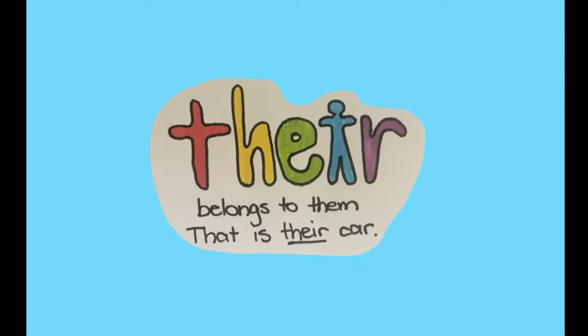Let's look at the first one. There — T-H-E-I-R. I've changed the I into a little person. And the reason I've done that is to remind myself that this 'there' means when something belongs to someone. That is their car. That is their pencil. It belongs to someone, so that's why the little person's there to remind you that it's mine — it belongs to me.